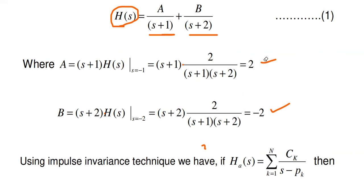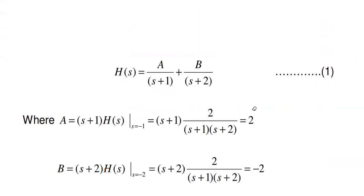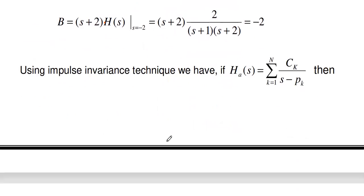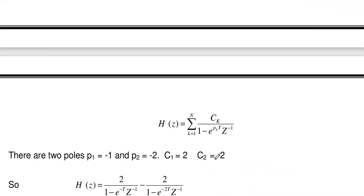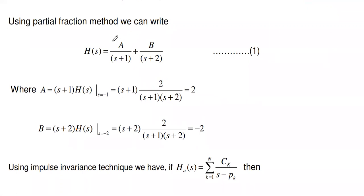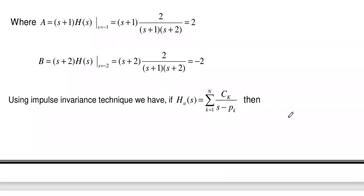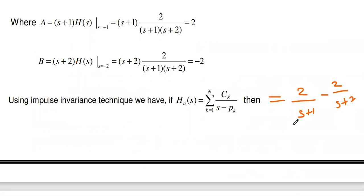Substituting A and B into equation one, H(S) = 2/(S+1) − 2/(S+2). Step three is complete. The analog transfer function has been expressed as the addition of single-pole transfer functions: 2/(S+1) and −2/(S+2).